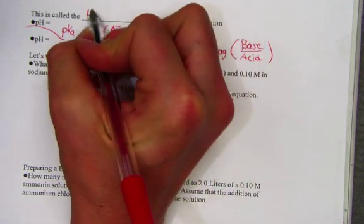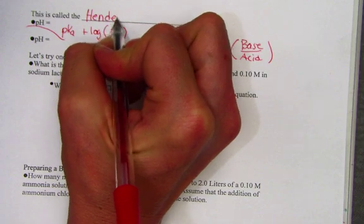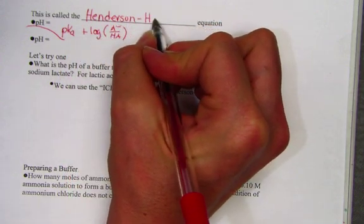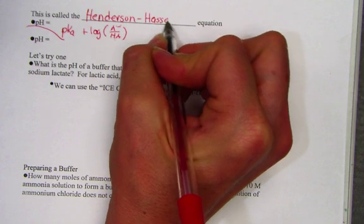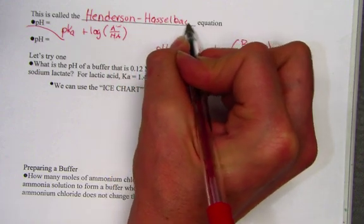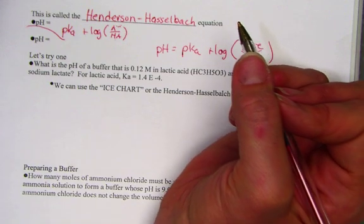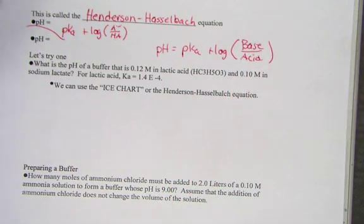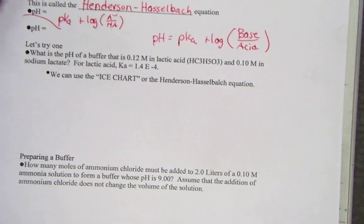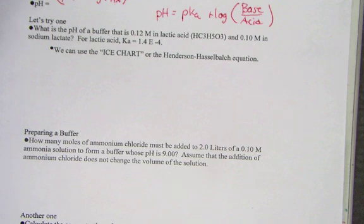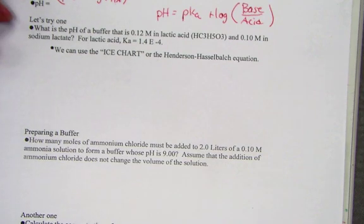Again, this is a very famous buffering equation. It has a title after two gentlemen, Henderson-Hasselbalch. H-A-S-S-E-L-B-A-C-H. The Henderson-Hasselbalch equation. Using this equation is quite easy. Developing it once for the algebra was a little bit tedious. But once we see it, it's now just a matter of plug and chug. Let's try one and show the Henderson-Hasselbalch in operation.